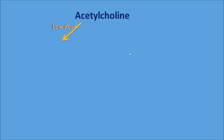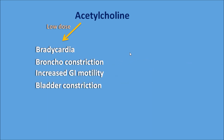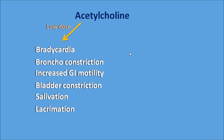Acetylcholine is one of the mediators in the parasympathetic system and at a low dose it produces one set of actions including bradycardia, bronchoconstriction, increased GI motility and bladder constriction, salivation, lacrimation, and fall in blood pressure.